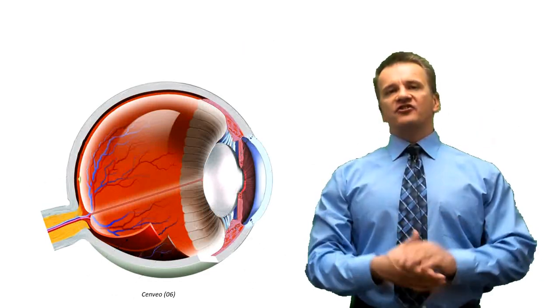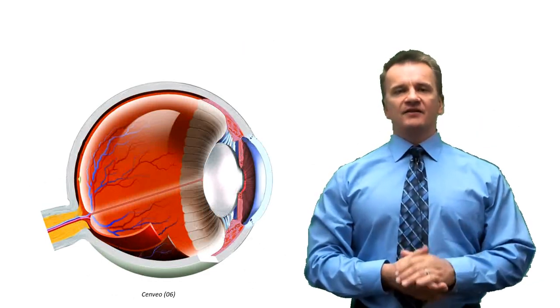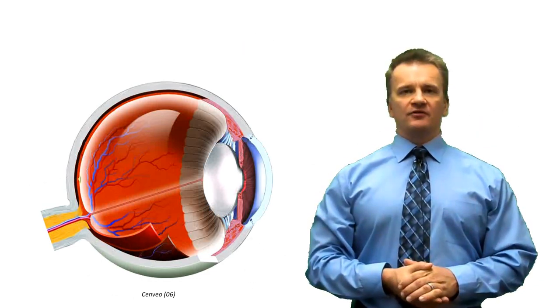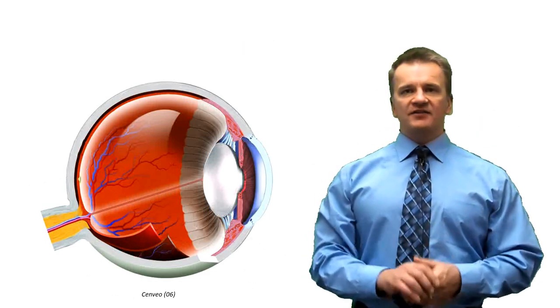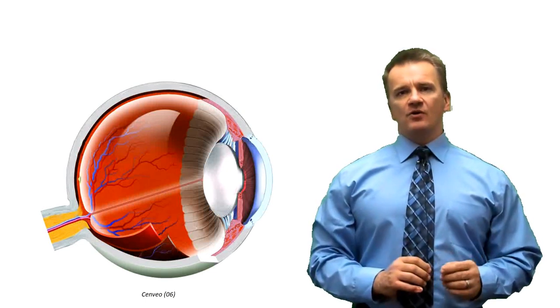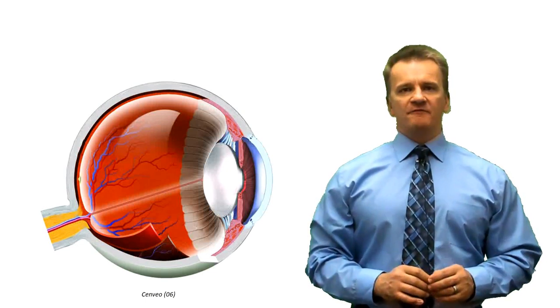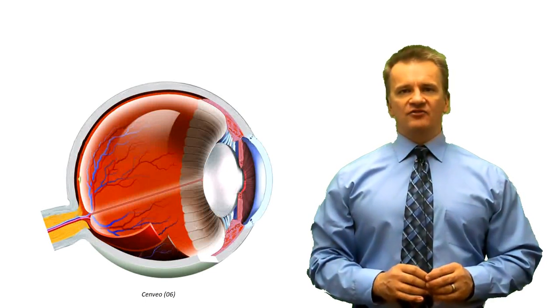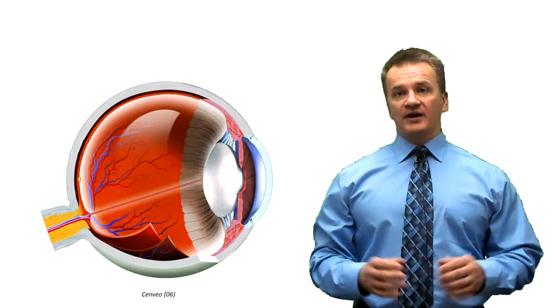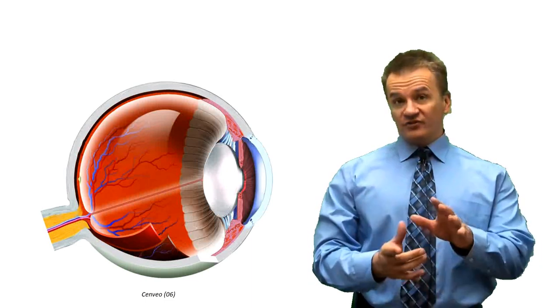That's going to do it for this discussion of the eye and its supporting structures. In the next segment, we'll look at the muscles of the orbit and the complex pattern of muscle contractions involved in generating muscular movements. We'll see you then.